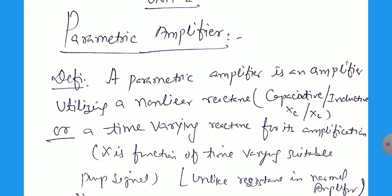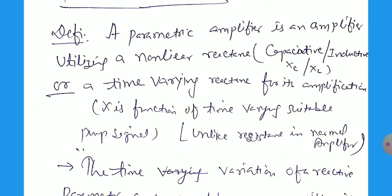The alternate definition of the parametric amplifier is that it uses a time-varying reactance for its amplification. The signal changes due to the change in reactance because reactance is related with frequency, so there will be amplification. The reactance X is a function of a time-varying pump signal, unlike a normal amplifier which uses resistance. Here we use reactance — either inductor L or capacitor C.